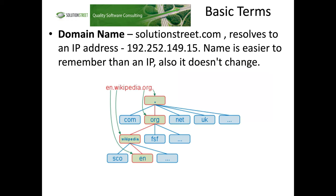A domain name like solutionstreet.com resolves to an IP address. The main reason we have domain names is that they're easier to remember, but also it gives us flexibility and portability. If I want to move solutionstreet.com from one server to another, I'm going to sometimes change the IP address. If people had the IP address written down, they'd lose access — but now they just remember solutionstreet.com and it maps to whatever IP address we're using.